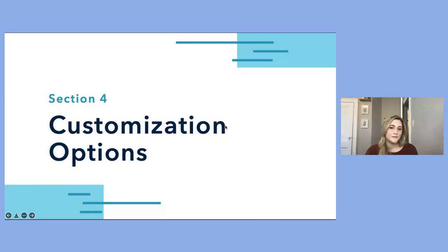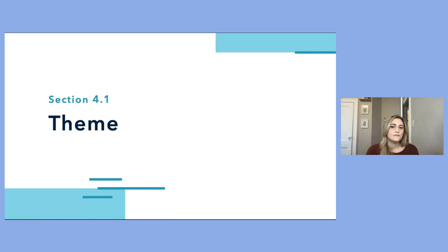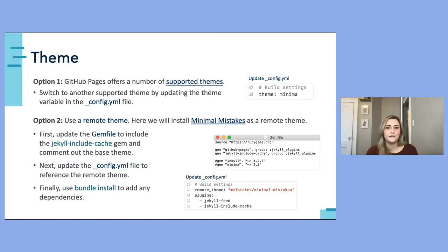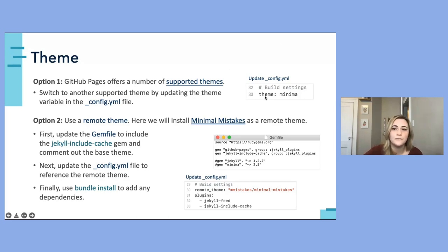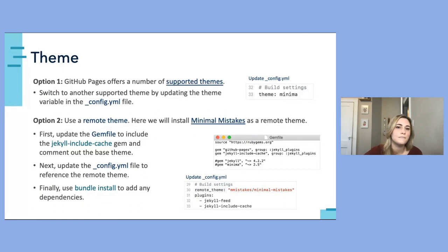Now let's talk about some of the customization options we have available, starting with how to update our theme. We can update the theme in a couple of different ways. The first is to use one of the themes supported by GitHub Pages — this process is much simpler, and we can easily switch to another theme just by updating the theme variable in the config file. The base theme when you create a Jekyll site is called Minima, but there are a couple of other supported options easily found via the provided link.